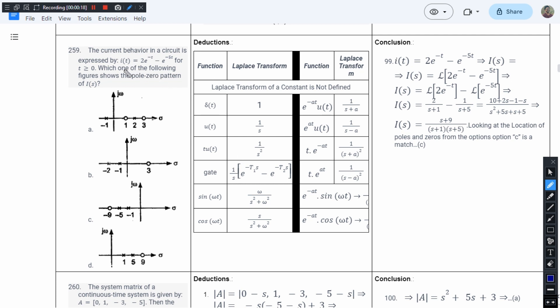Here the value of current is this, so we need to find the Laplace transform. The Laplace transform of 2e^(-t) minus e^(-5t). The 2 is a constant so it will come out. The Laplace transform of e^(-t) is 1/(s+1).